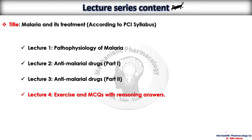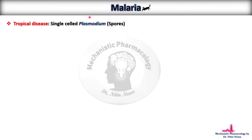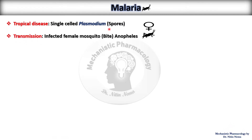Let us begin with the learning. What is malaria? It is one of the tropical diseases and of course a life-threatening one. This is caused due to a single-celled plasmodium, a genus of unicellular eukaryotes that are parasites. This is transmitted by the bite of an infected female mosquito called Anopheles, which is a type of genus.